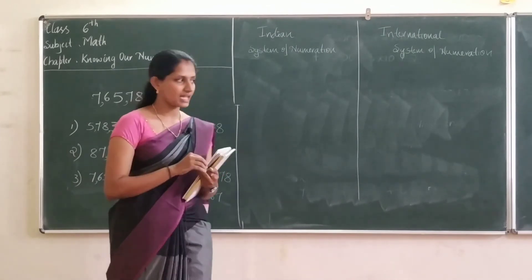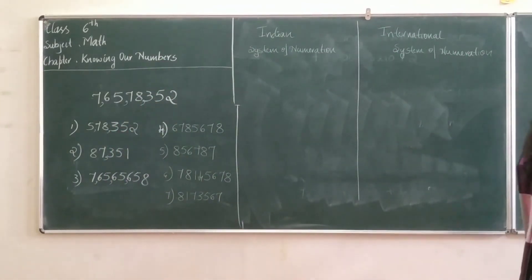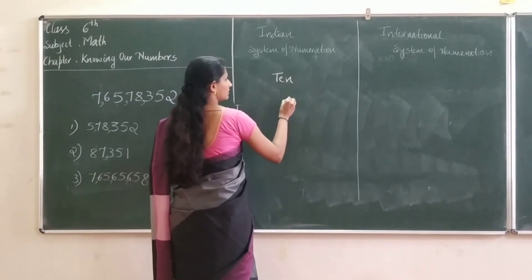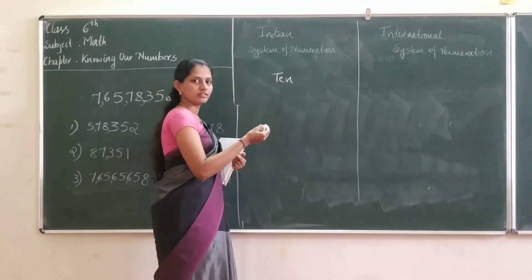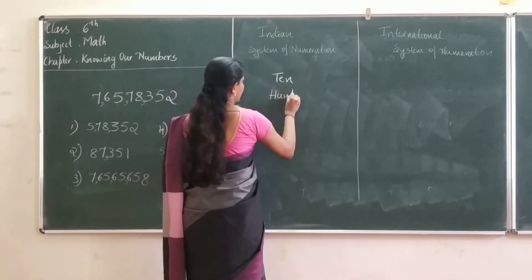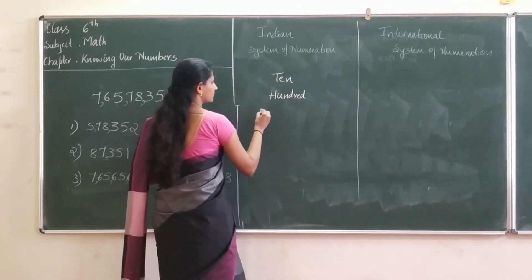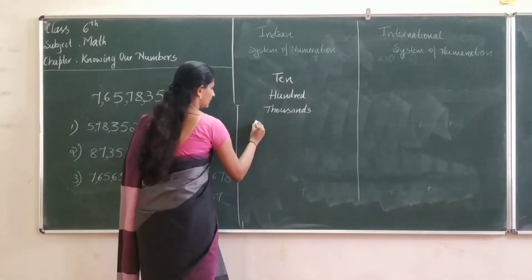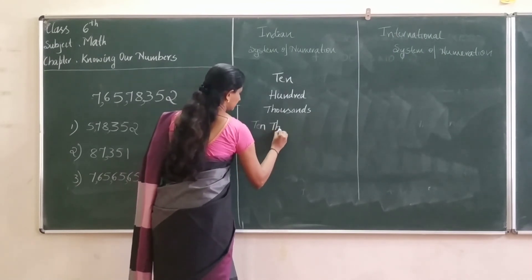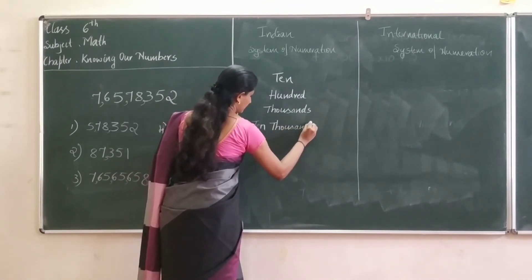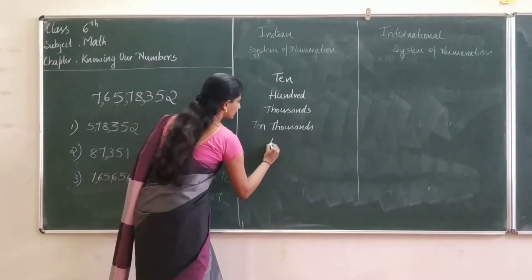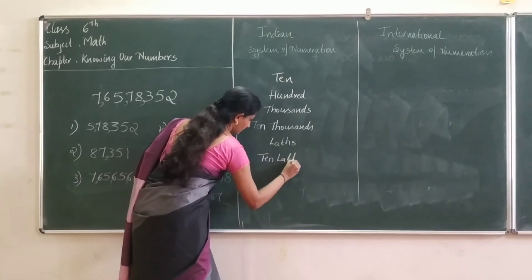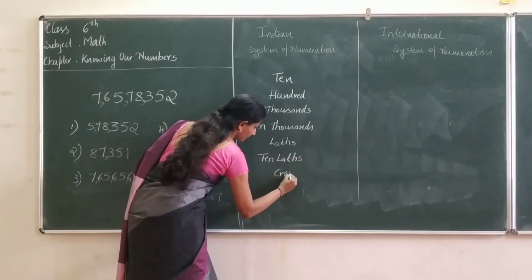First, what is that? Ones, tens, hundreds, thousands, ten thousands, lakhs, ten lakhs, and crore. That is the Indian system of numeration — ones, tens, hundreds, thousands, ten thousands, lakh, ten lakhs, and crore.